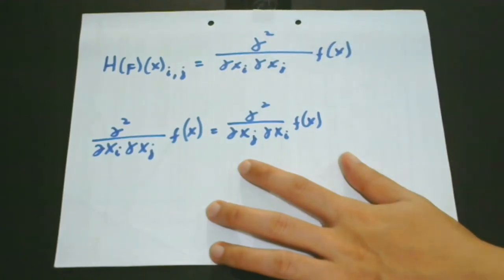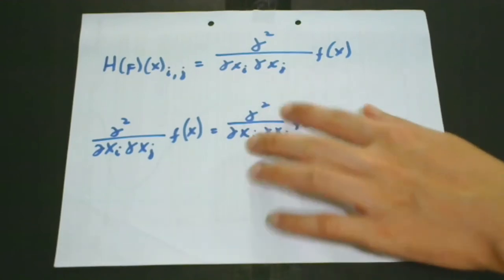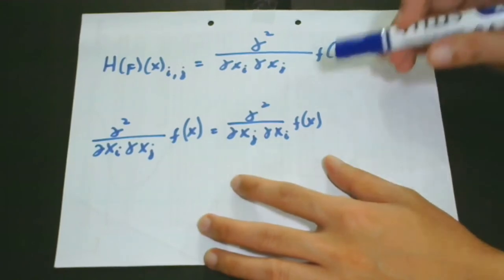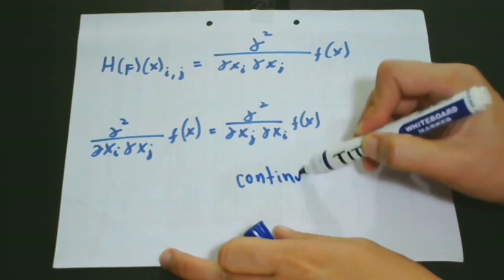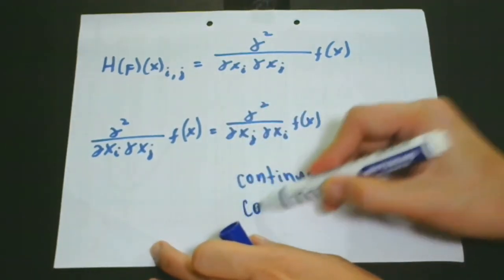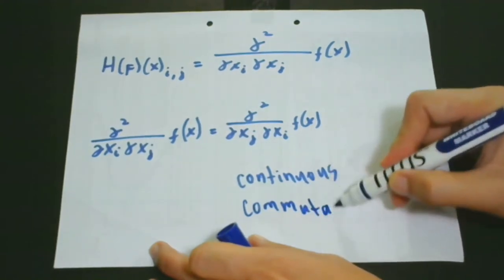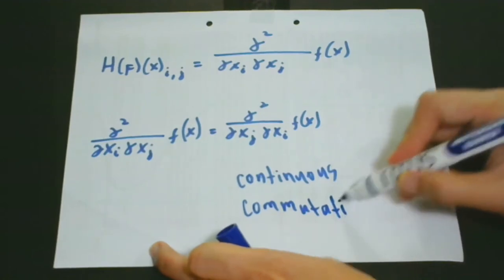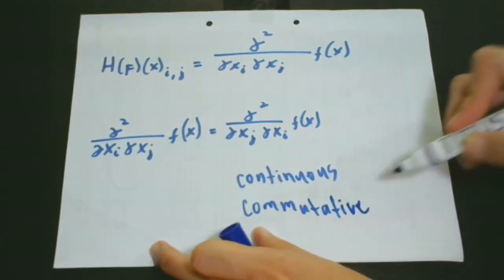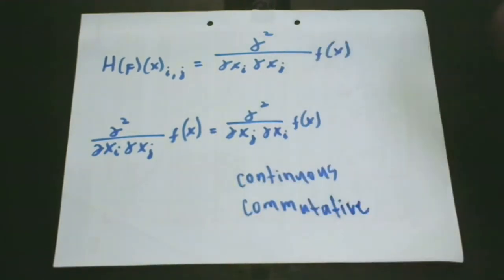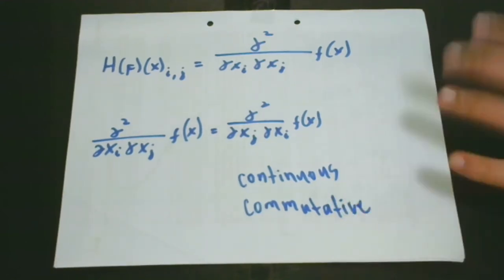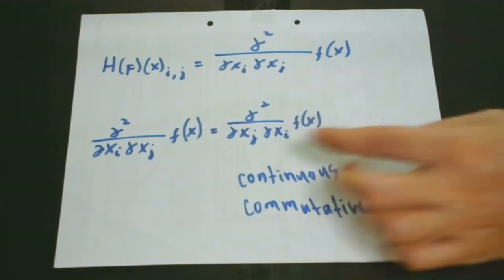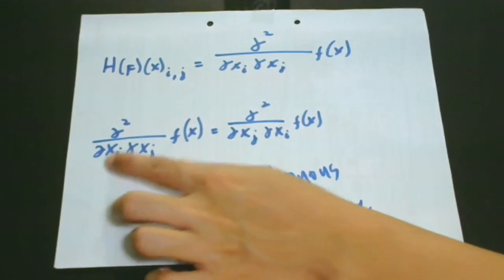With this, we can say that the second partial derivatives are continuous. This is very important: the second partial derivative is continuous, and the differential operations are commutative. Commutativity is a very important property when talking about the Hessian matrix. Because it is continuous and commutative, the order of the derivatives of the variables can be swapped.